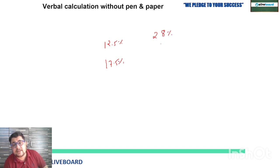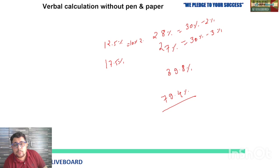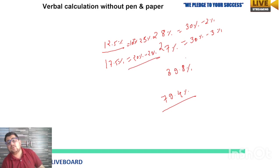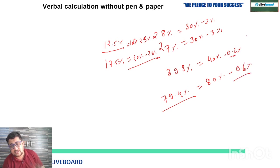Similarly, suppose you have to calculate 12.5%, 17.5%, 28%, 27%, or 39.8%, 79.4%—how will you calculate these values? 28% is 30% minus 2%. 27% is 30% minus 3%. 12.5% is 10% plus 2.5%. 17.5% is 20% minus 2.5%. 39.8% is 40% minus 0.2%. 79.4% is 80% minus 0.6%.